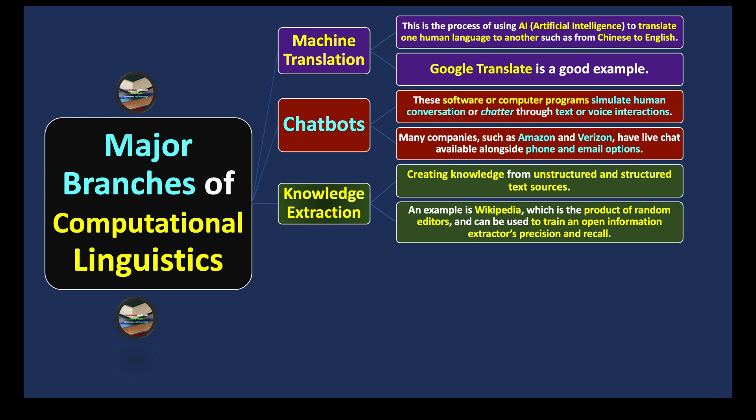Anytime when you want any type of information, you just type in the search box and Wikipedia will provide you the information. Knowledge extraction—not only Wikipedia, Google search can also be one of the examples of extracting knowledge or information.